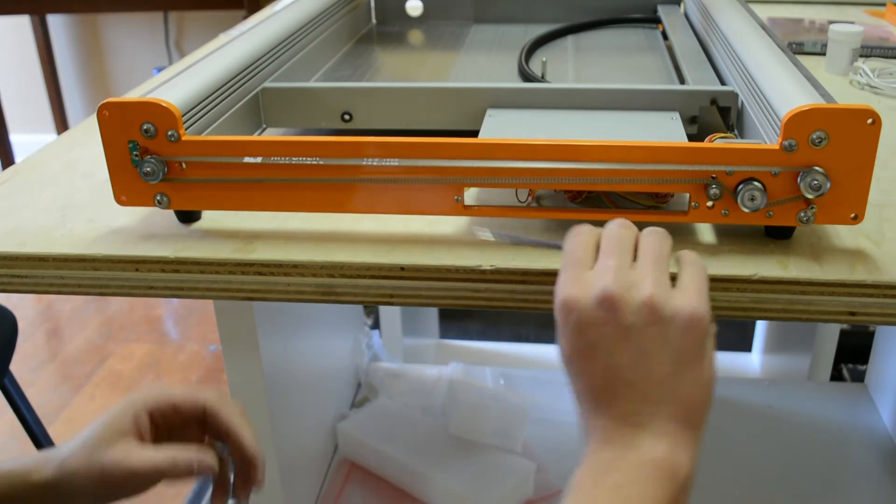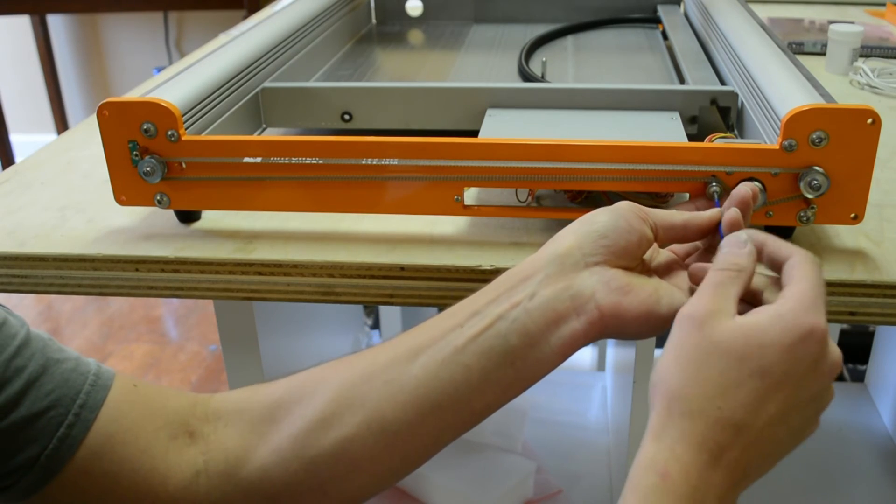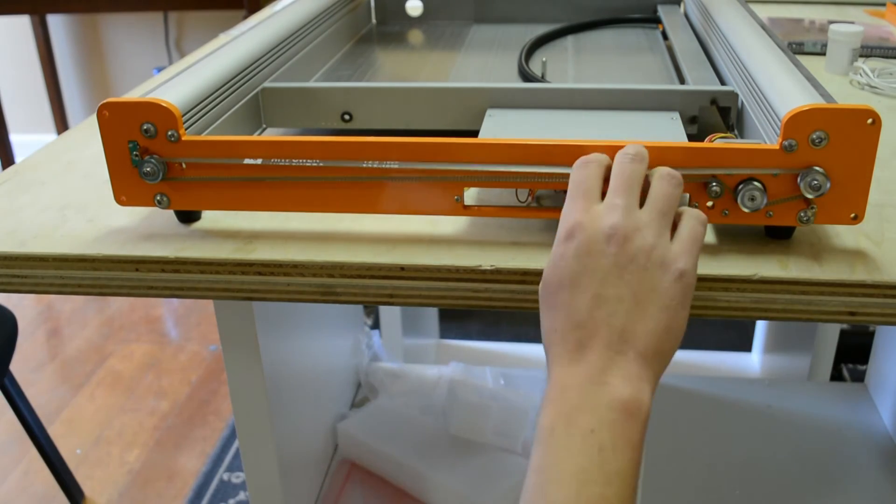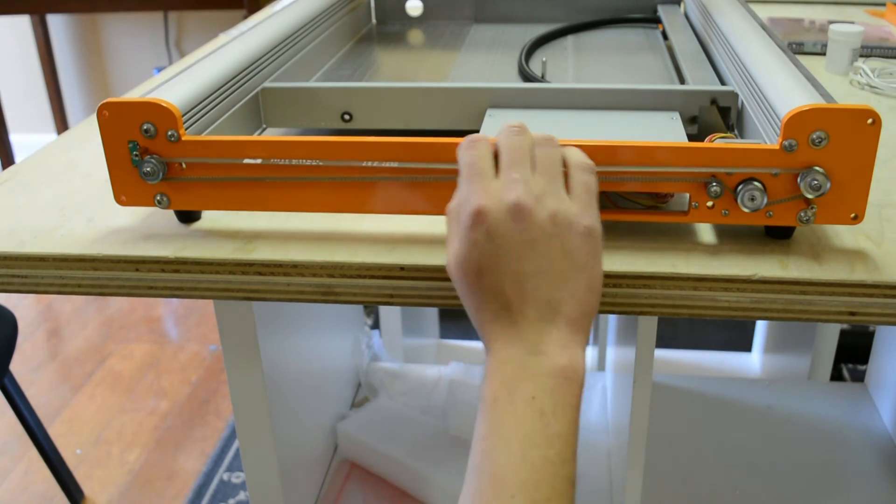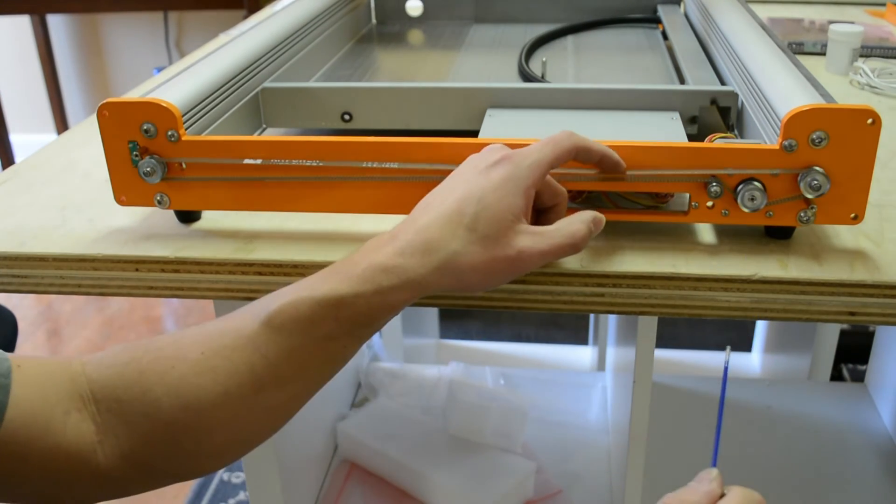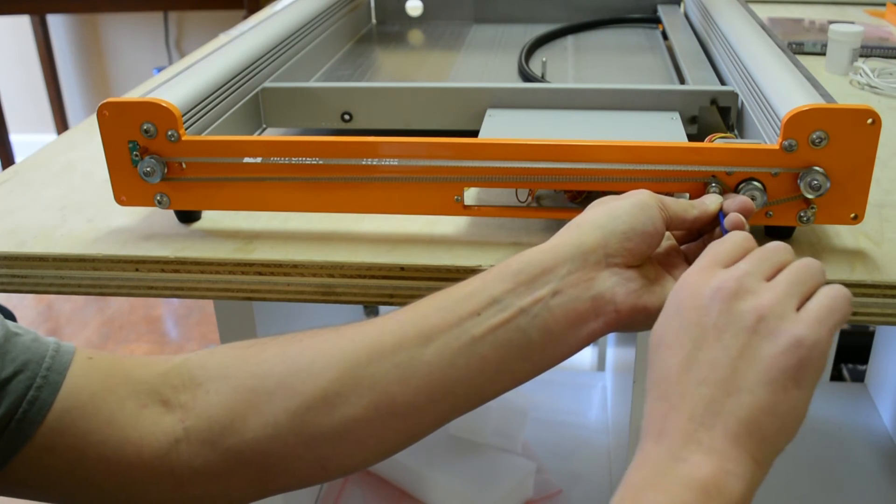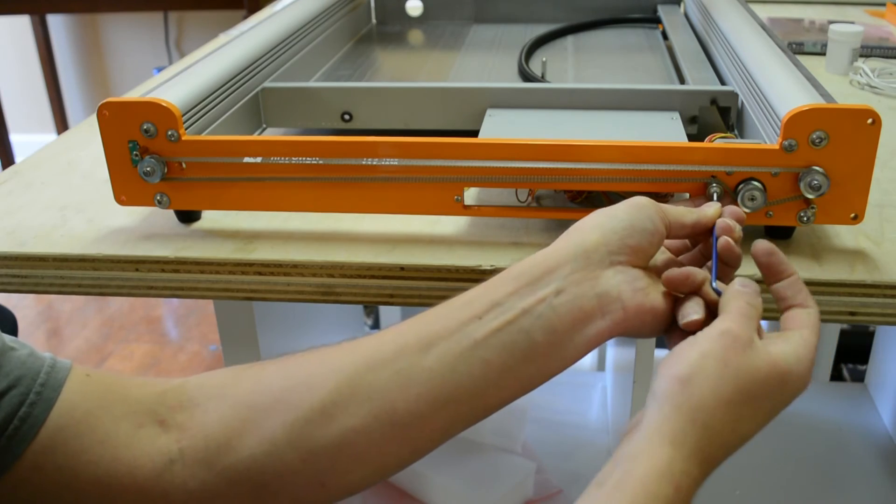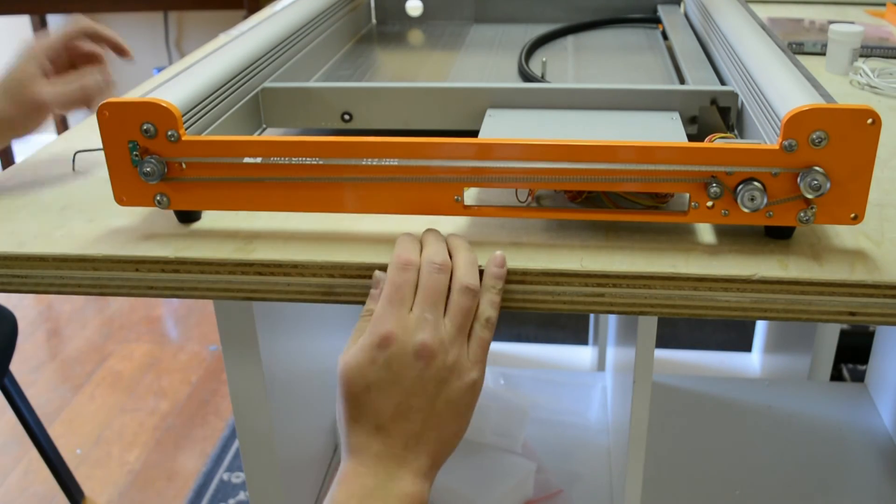Then the belt is on and with this loose you can put some tension on the belt. You don't want it to be overly tight. That's a little bit too much right there. That is good.